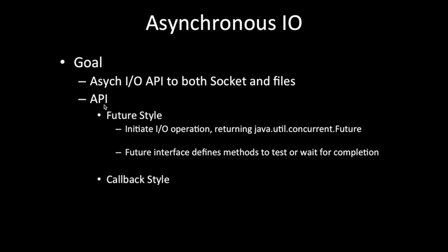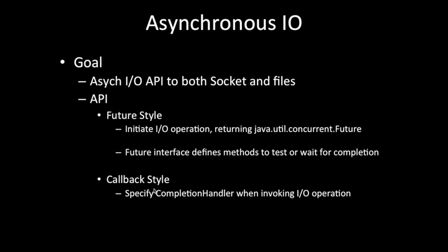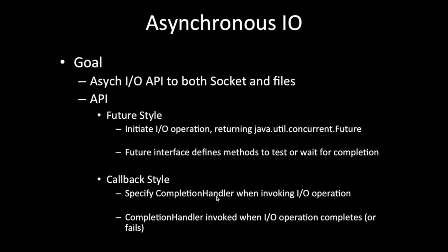The second API style is callback. In the callback style, we wait for an event — completion handlers are invoked when the I/O operation is initiated. If anything fails, or the I/O operation completes, we also invoke the callback. So for asynchronous I/O, the two API styles are future and callback.